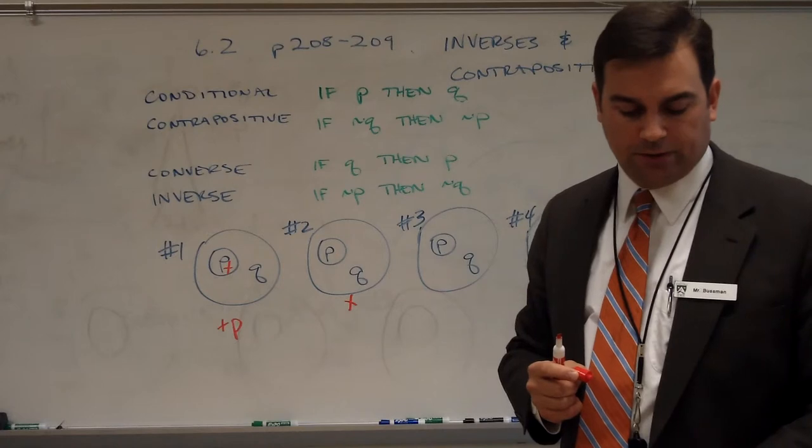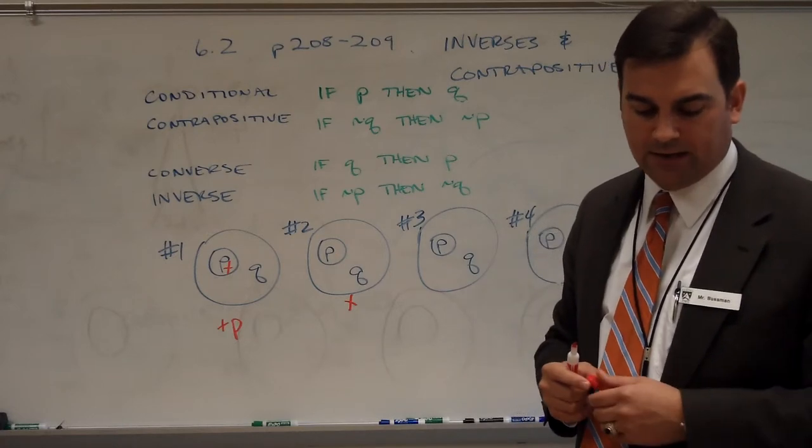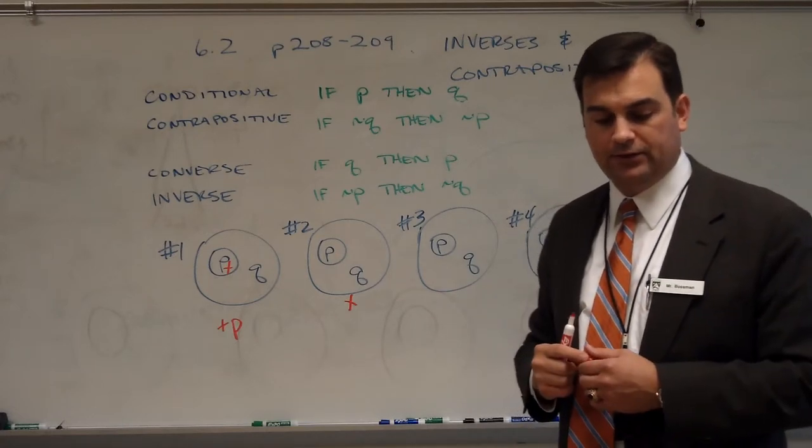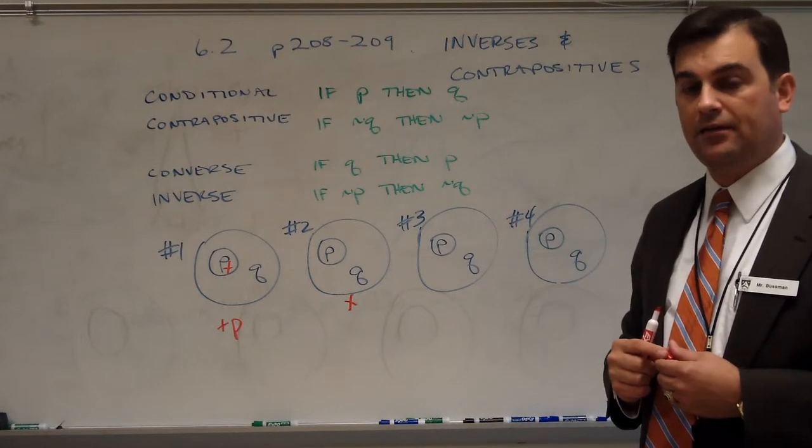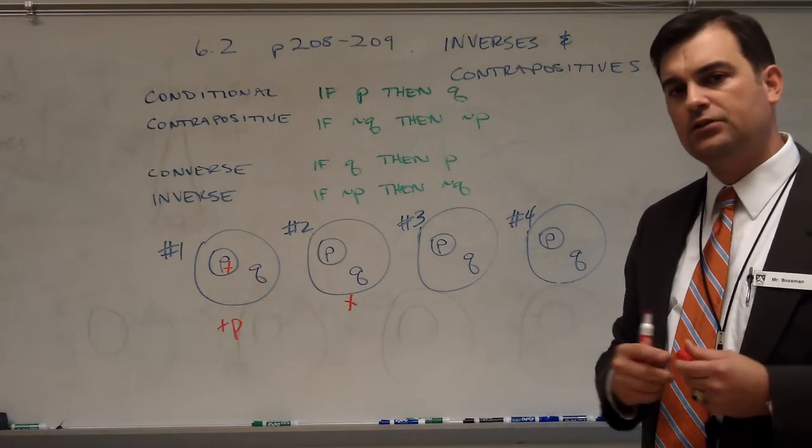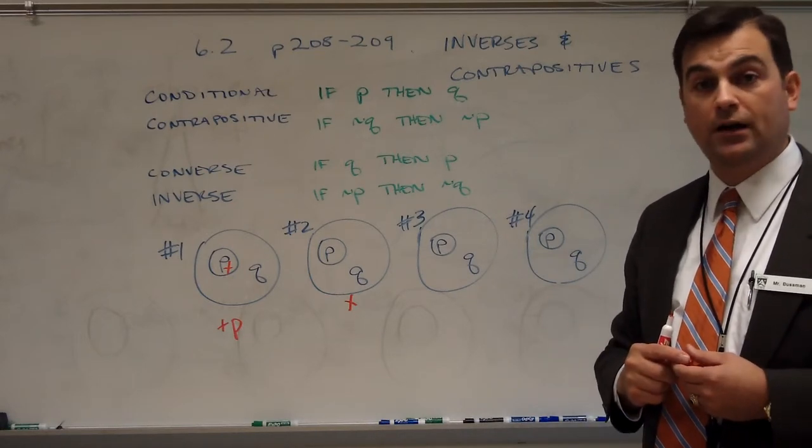Now look at statements three and four. Number three says, all runners are athletes. Linda is an athlete. Can I draw some conclusion about whether or not she's a runner?